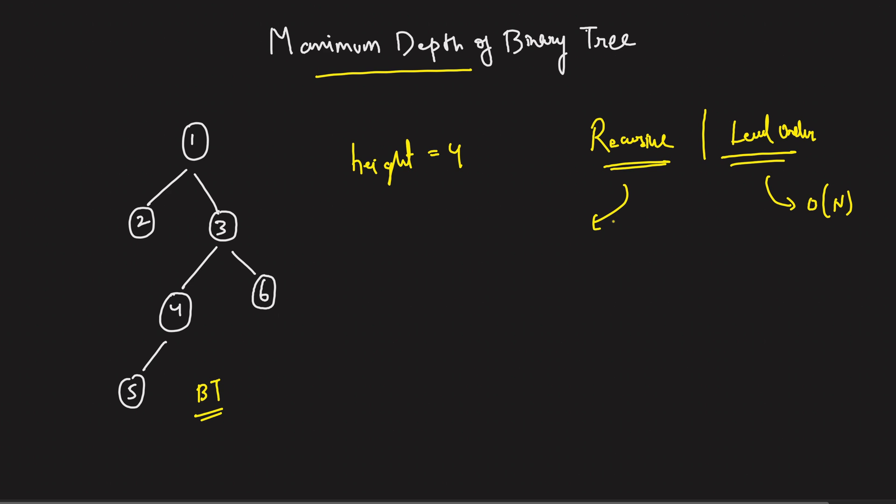The recursive doesn't use any space complexity, but it does use the auxiliary space, right? And the auxiliary space can go up to as high as O(height) of the binary tree. Again, the recursive and the level order might end up taking a similar kind of space complexity if you consider the worst case. Like for this level order, the worst case will be when you're given a complete binary tree, right? When the last level is completely filled, then this level order will end up taking O(N) space because the last level is going to have a lot of nodes.